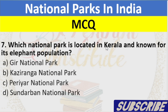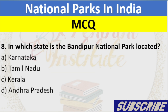Question 7: Which National Park is located in Kerala and known for its elephant population? A. Gir National Park, B. Kaziranga National Park, C. Periyar National Park, D. Sundarbans National Park. Answer: C. Periyar National Park.